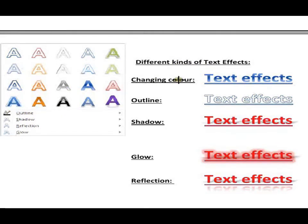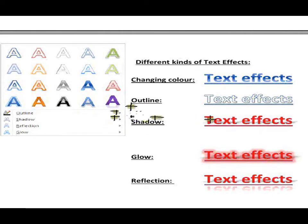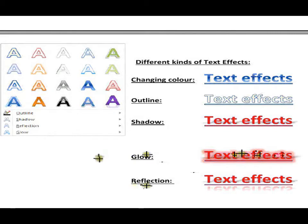The first font effect is changing the color — you can see this option and change the color of your text. Next to it is Outline, which gives an outline to your text with different colors. After that is Shadow, which gives your text a shadow effect. Next is Glow, which makes your text glowing as you can see in the example. And next to it is Reflection, which gives a reflection of your text. These are the different options you can select to make your text more colorful.